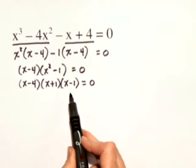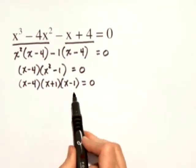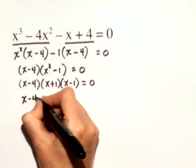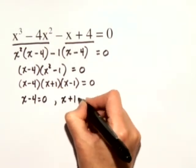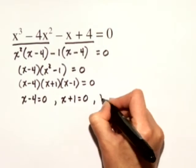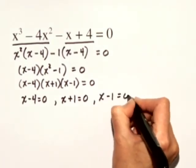We'll apply the zero product principle and set each factor equal to 0. So we have x minus 4 is equal to 0, or x plus 1 is equal to 0, or x minus 1 is equal to 0.